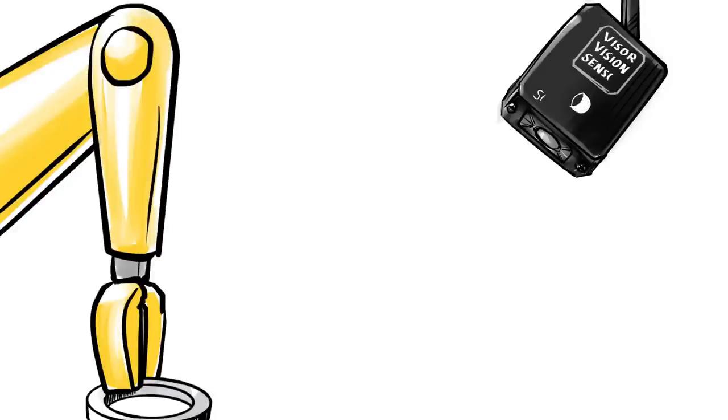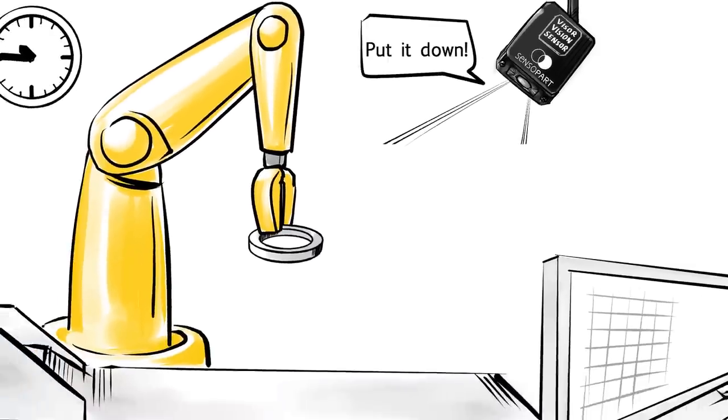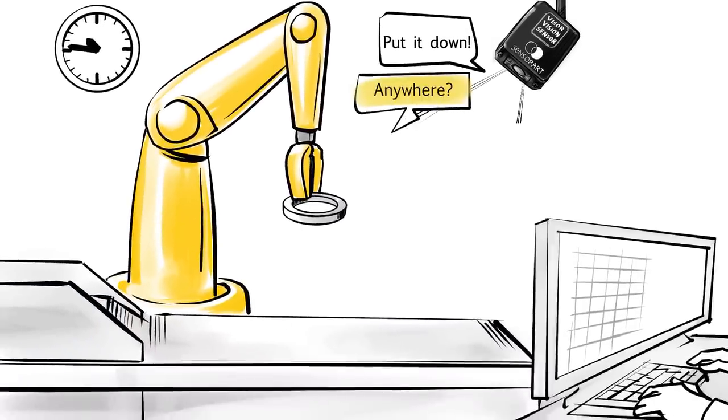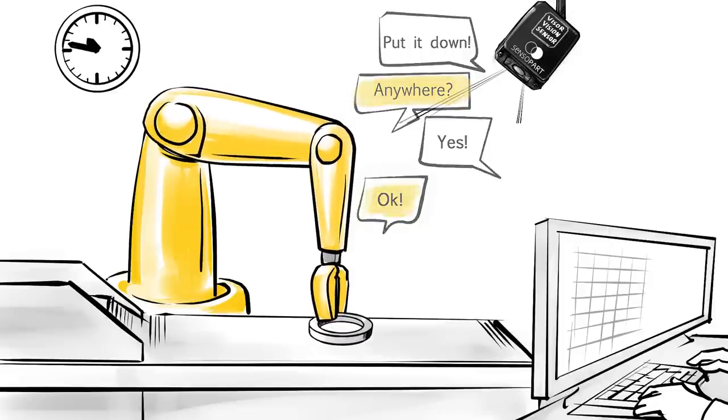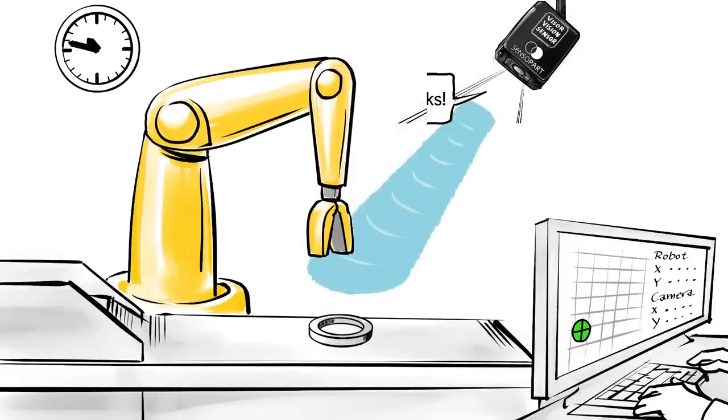SensoPart cameras output a part position in robot coordinates. The unit of measurement is irrelevant, as our camera is taught by the robot. The robot shows the part. The camera sees it. It's as simple as that.